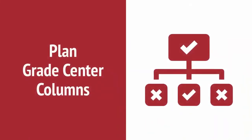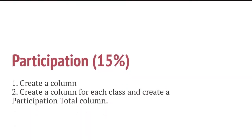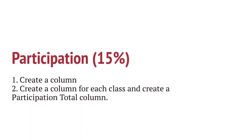Before creating or editing any total column, plan the rest of your Grade Center columns. Based on the example grade breakdown, there are a couple of options for each category. For participation, either create one column and enter a value, or create a column for each class meeting, then create a total column for this group of columns.